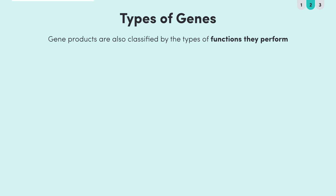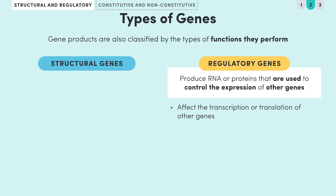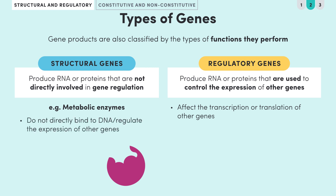Gene products are classified not only by the type of molecule they are but also by the types of functions they perform. We often make a distinction between structural and regulatory genes. The products of regulatory genes — proteins or RNA — are used to control the expression of other genes, affecting transcription or translation of other genes. Structural genes, on the other hand, produce RNA or proteins not directly involved in gene regulation, such as metabolic enzymes, which catalyse metabolic reactions in the cell cytoplasm rather than binding to DNA.